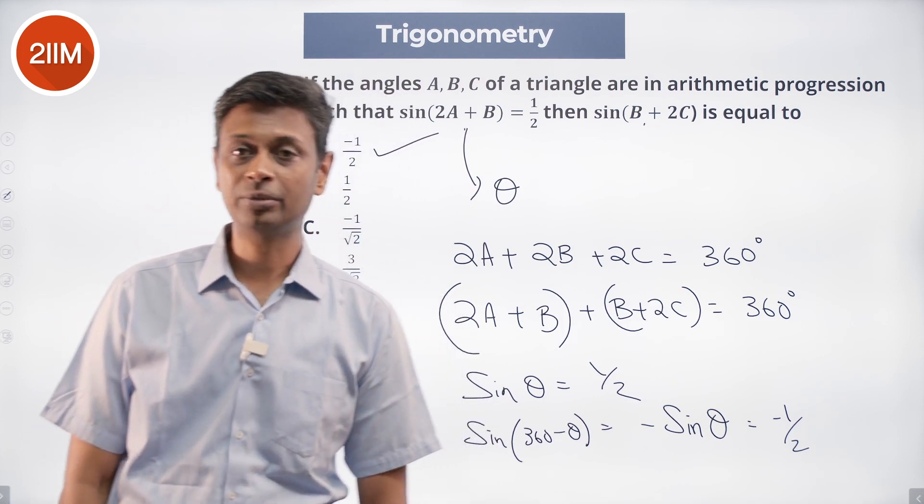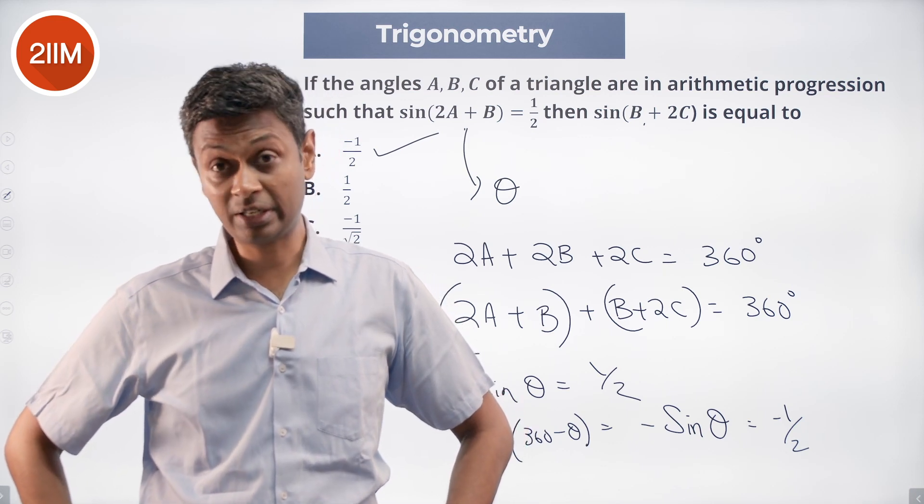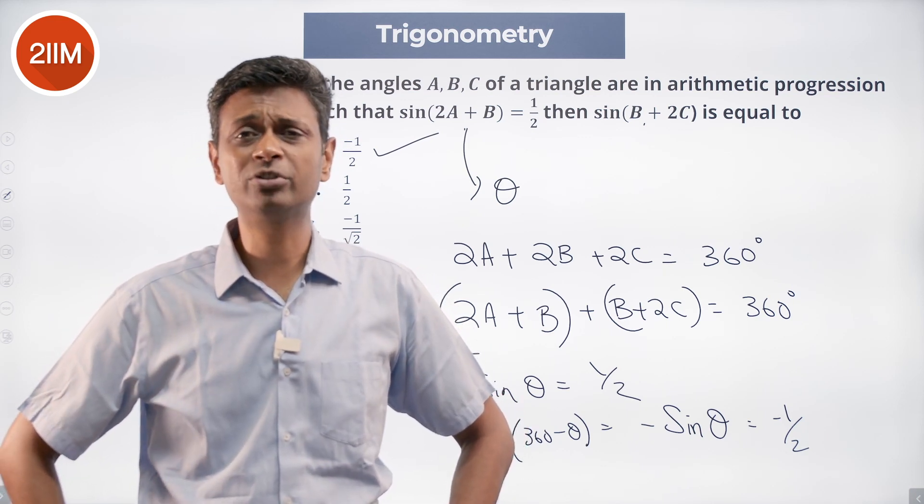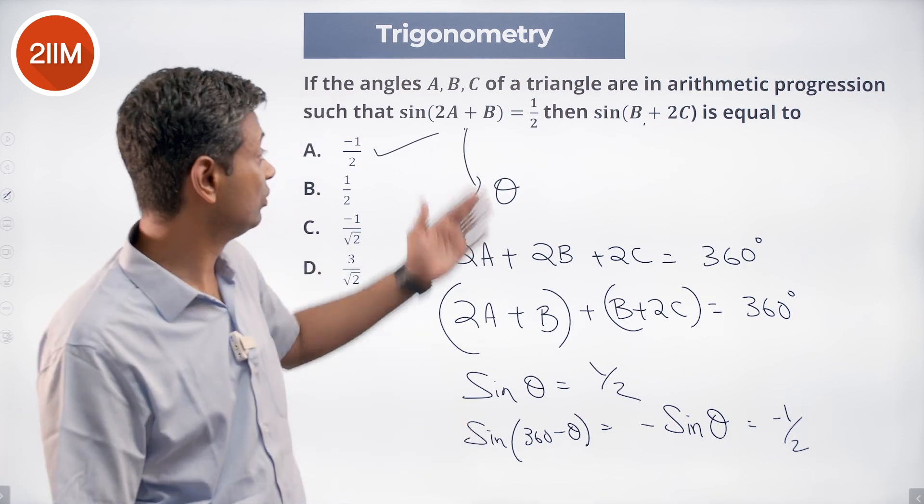Rather straightforward question. Whenever you are in the triangles world, we need to keep in mind that A plus B plus C is 180, 2A plus 2B plus 2C therefore is 360. This is theta, that is 360 minus theta. We are done.